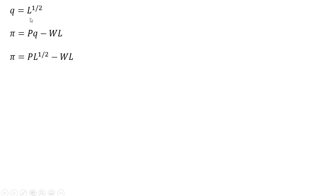So substituting in for Q, L to the 1 half, and now we're going to take the derivative of this profit function with respect to labor, and we get the following. We're maximizing, so we're setting this equal to zero, and we're going to solve for L.